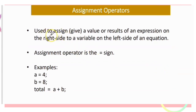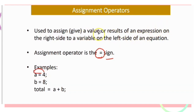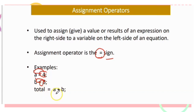Assignment operators are used to give a value or result of an expression on the right side to the variable on the left side of an equation. The assignment operator is =. Example: A = B assigns B to A; total = A + B assigns the value of A + B to total.